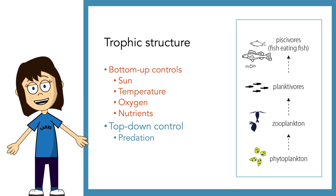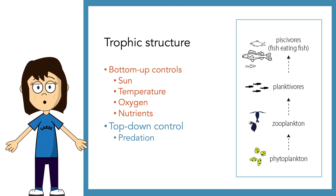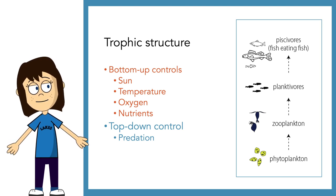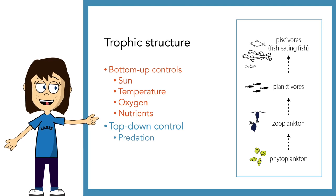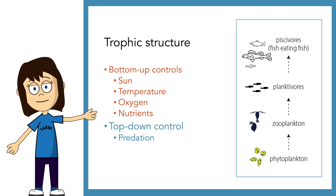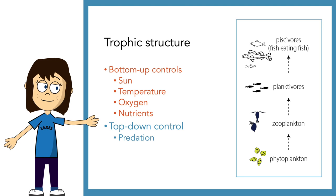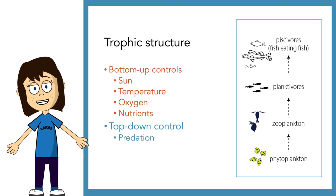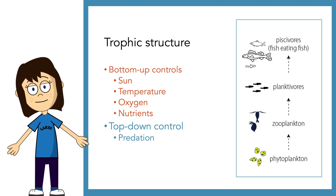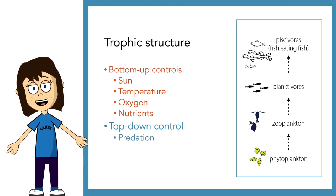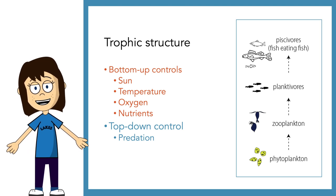When we learned about trophic structures, we learned there can be bottom-up controls and top-down controls, both of which control the size of populations. In lakes, the bottom-up controls are things like solar radiation — how much energy is available for phytoplankton — also temperature, which is really important for controlling cellular processes. Phytoplankton can grow much more quickly in warm waters. Also oxygen, which can definitely limit the presence of life in aquatic ecosystems. And nutrients — if we have a lot of phosphorus and nitrogen in our waters, we tend to see a lot of phytoplankton.